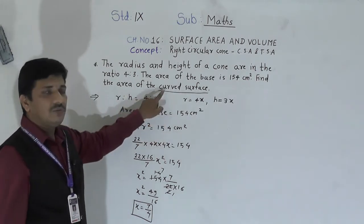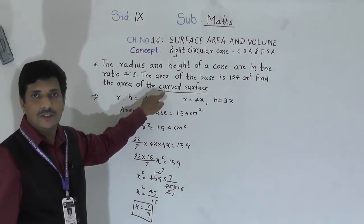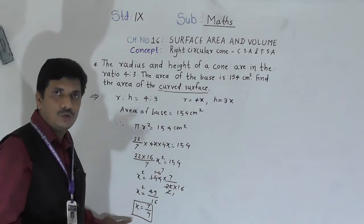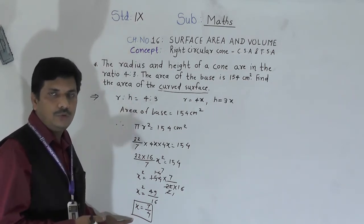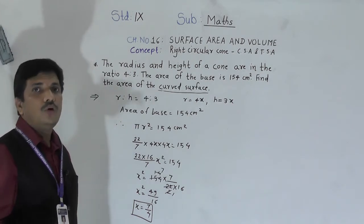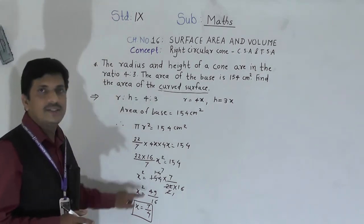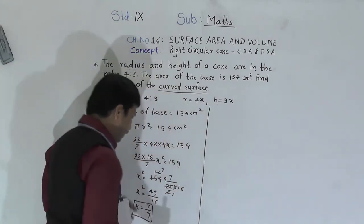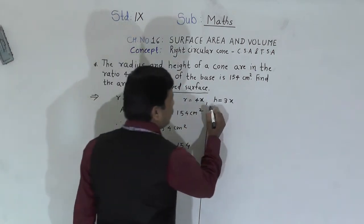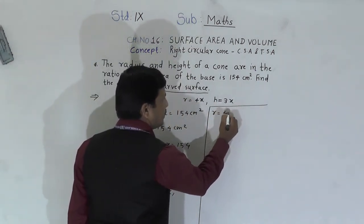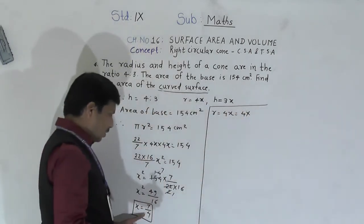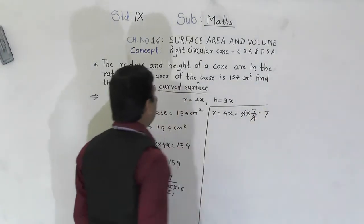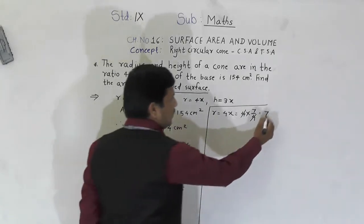Now, we have to find out curved surface area, and curved surface area uses the formula pi r l. So we must know radius and l, which is the slant height. To find slant height we must know radius and vertical height. Now x equals 7/4, so radius equals 4x equals 4 × (7/4) — the 4 cancels — so radius equals 7 cm.